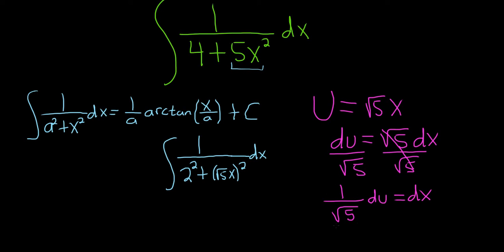So the dx is going to be 1 over root 5 du. So we'll pull that out like this. And then we have our du over here. So far, I've only replaced the dx with 1 over the square root of 5 times du. And we're left with 1 over 2 squared plus u squared.